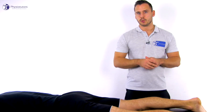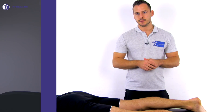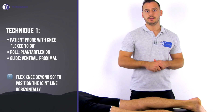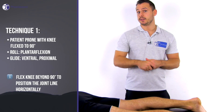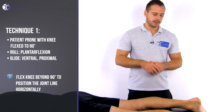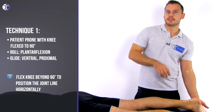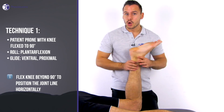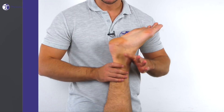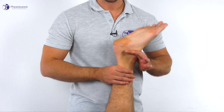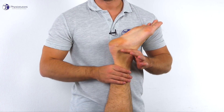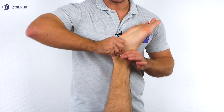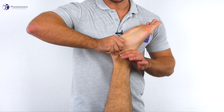For roll-glide assessment, have the patient in prone lying position with the knee bent to 90 degrees. Then place the web of one hand over the neck of the talus and the other hand over the plantar aspect of the calcaneus.